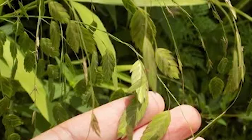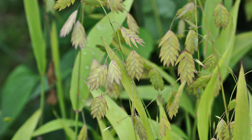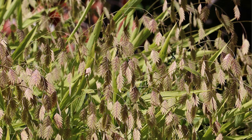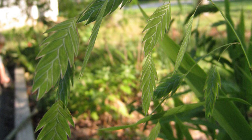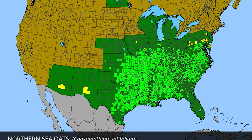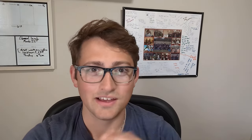Another favorite grass is northern sea oats, also called fish on a pole — one of my favorite plant names. They get about two to five feet tall and add a really cool texture, especially with the seeds as they set from late summer into fall. A note: they will slowly spread and take over an area and are hard to remove once established. But they work really well for erosion control due to their tight, woven roots in the soil and create a fascinating texture overall.